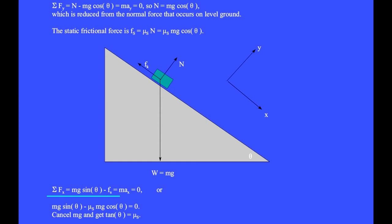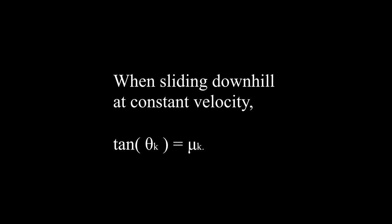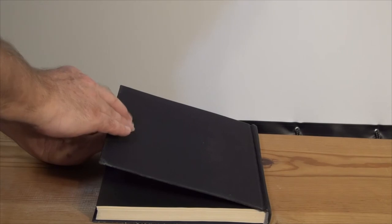The sum of the x components of forces is plus mg sine theta minus the static frictional force equals mass times the x component of acceleration, which equals zero. Replacing the frictional force, we have mg sine theta minus mu s times mg cosine theta equals zero. Cancel mg and form tan theta equals mu sub s. Please put an object on a surface and tilt it through angle theta until the object slips. Using tan theta, calculate the coefficient of static friction between the two materials. At a particular angle, the object slides at constant velocity, so kinetic friction is involved and the acceleration is still zero, giving tan theta sub k equals mu sub k. Between those two angles, stick-slip motion might occur.